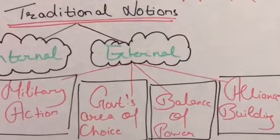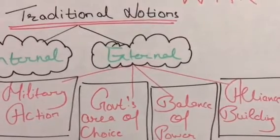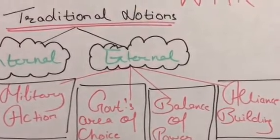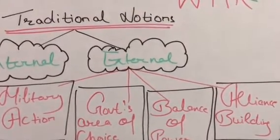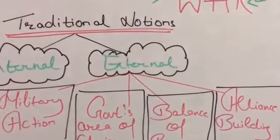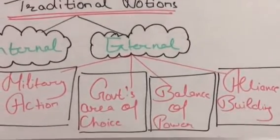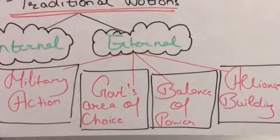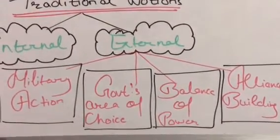The first element of the external aspect of the traditional notion is military action, the second is government's area of choice, the third is balance of power, and the fourth is alliance building.